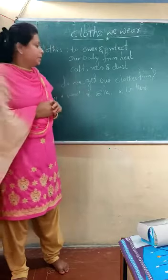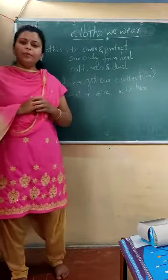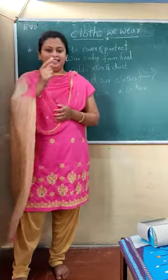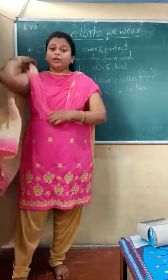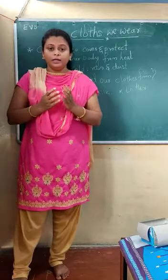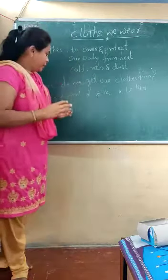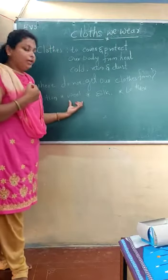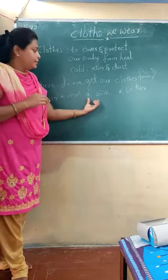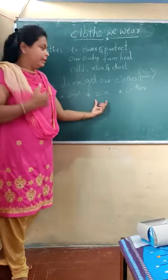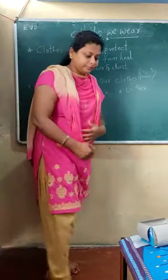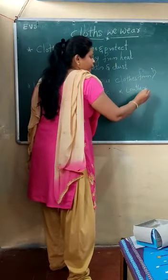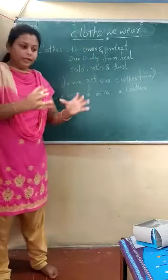From where do we get the clothes? There are some sources. For example, the first one is cotton, then we get some type of cloth that is wool, some type of cloth that is silk, and then leather — the last one is leather. Cotton comes from plants, wool comes from animals, silk comes from the silkworm, and leather we get from animals.